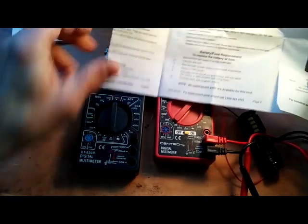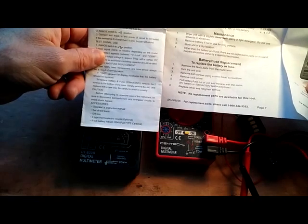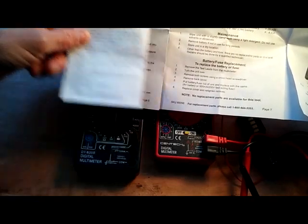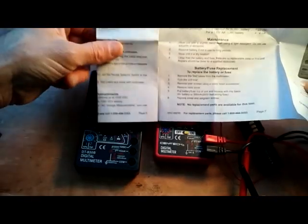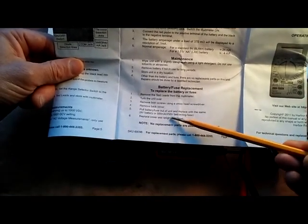That's rated on the old multimeter, the first cheap one from China, to 200 milliamps, 250 volt, 200 milliamps. On the Harbor Freight, it's an upgraded fuse. It can take up to 500 milliamps of current with 250 volts.